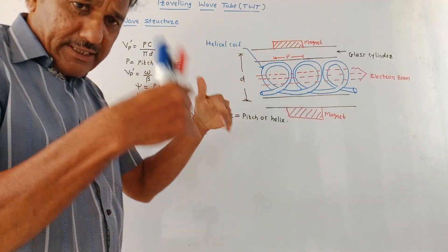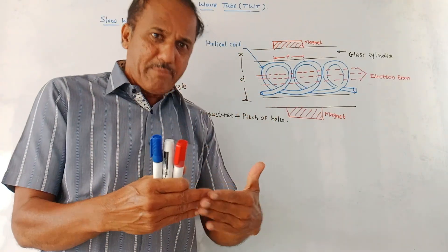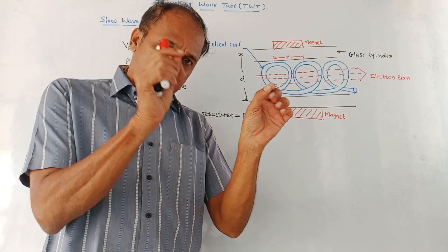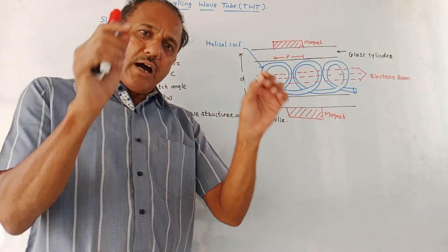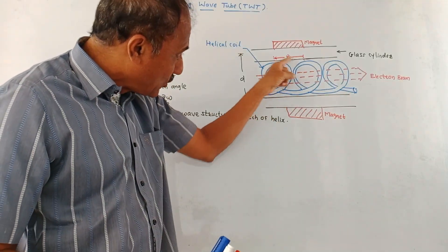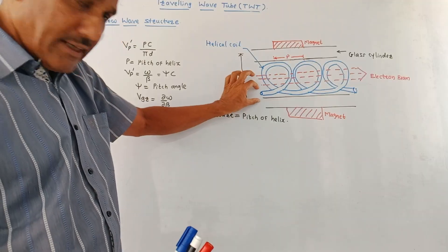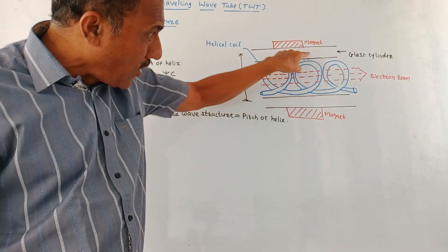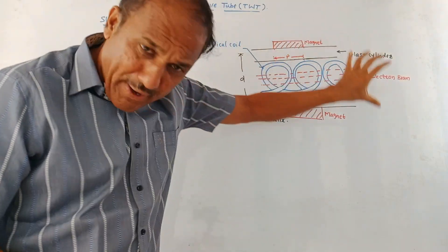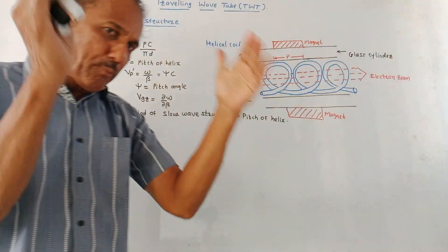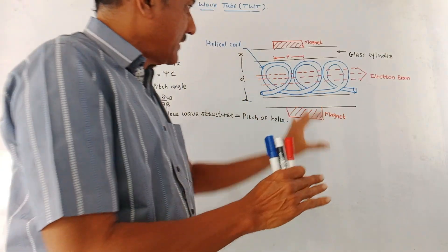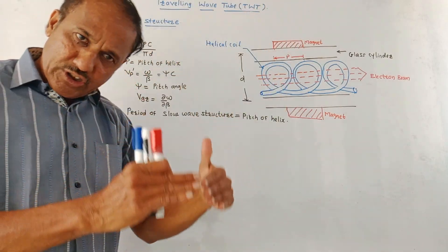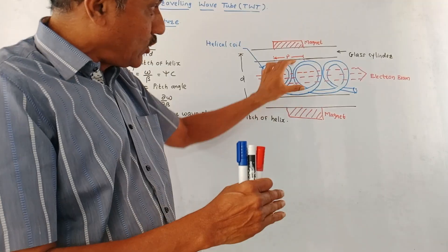Whenever there is a speed difference between the electron beam and the RF field, there should be proper interaction between the two. So the RF field is retarded by making use of this structure because you can well see in this diagram. Here at the input side, RF field is applied. This RF field has to travel a longer path to reach at the output compared to the path followed by the electron beam. So there will be proper interaction between the two fields. This is the major use of slow wave structure. Because of the slow wave structure, the velocity of RF field gets affected and there will be proper interaction.